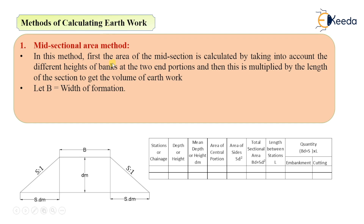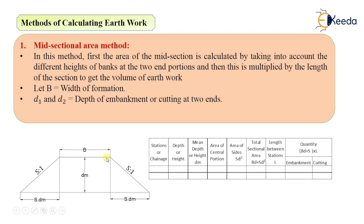We will see this in detail in the numerical. This is the standard format or table in which it is calculated, and this is the section of an embankment. Let us consider that b is the width of formation, and d1 and d2 are the depth of embankment or cutting at two ends. So at one particular section the depth is d1 and at another section the depth is d2. We take the average depth, which is the average height of the two embankment portions.